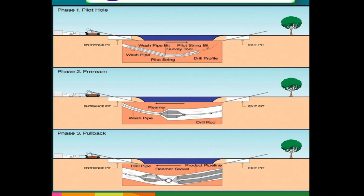What is horizontal directional drilling used for? It is used for installing underground pipelines, cables, and service conduits through a trenchless method. It involves the use of a directional drilling machine and associated attachments to accurately drill through the chosen bore path and back-ream the required pipe.